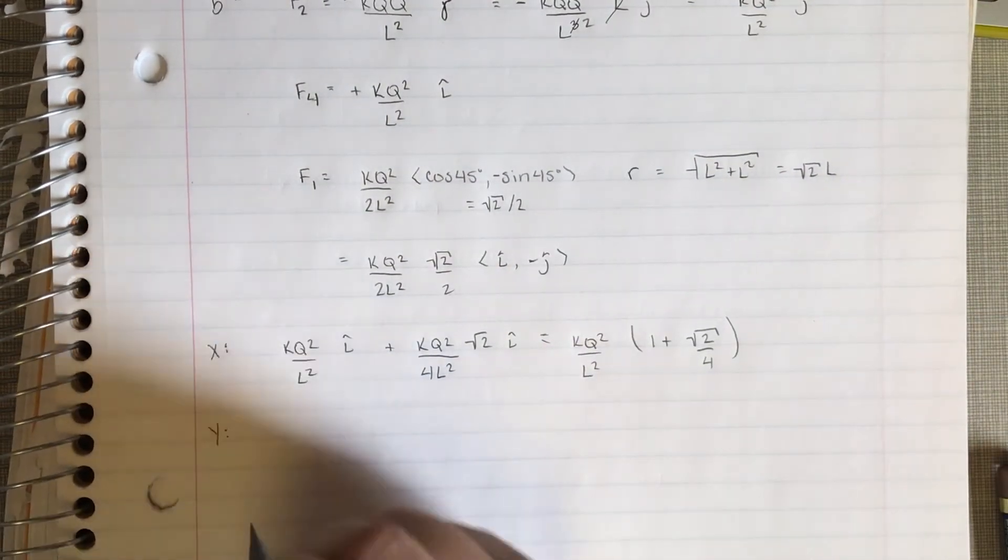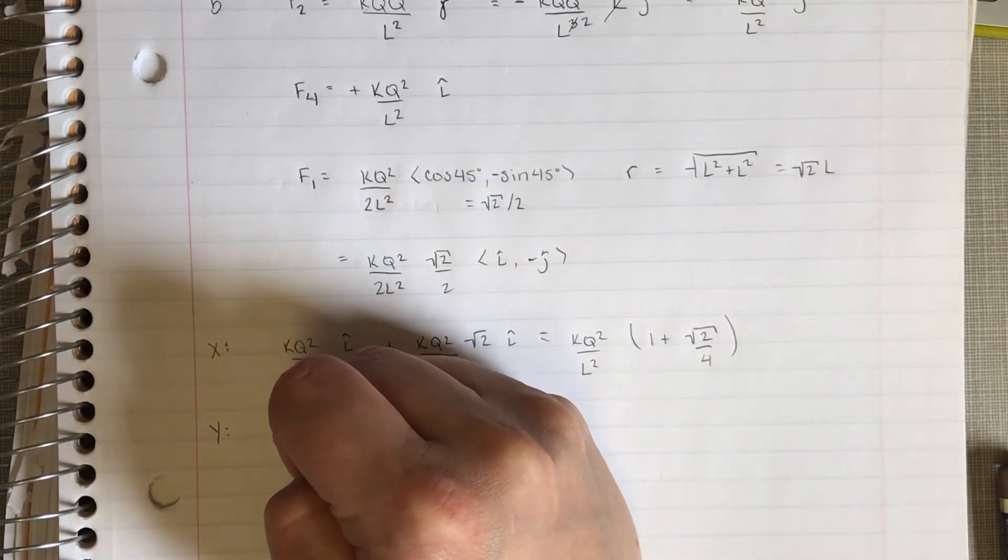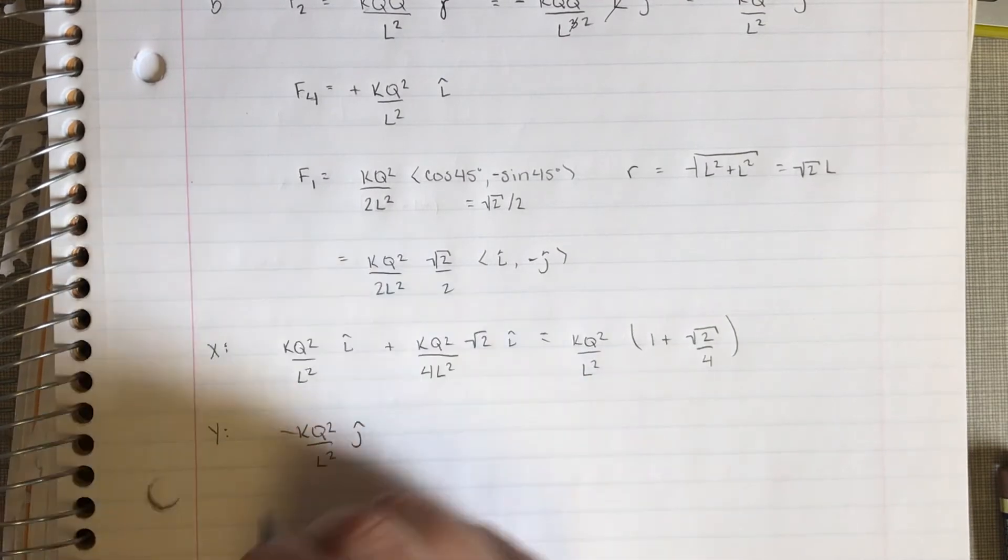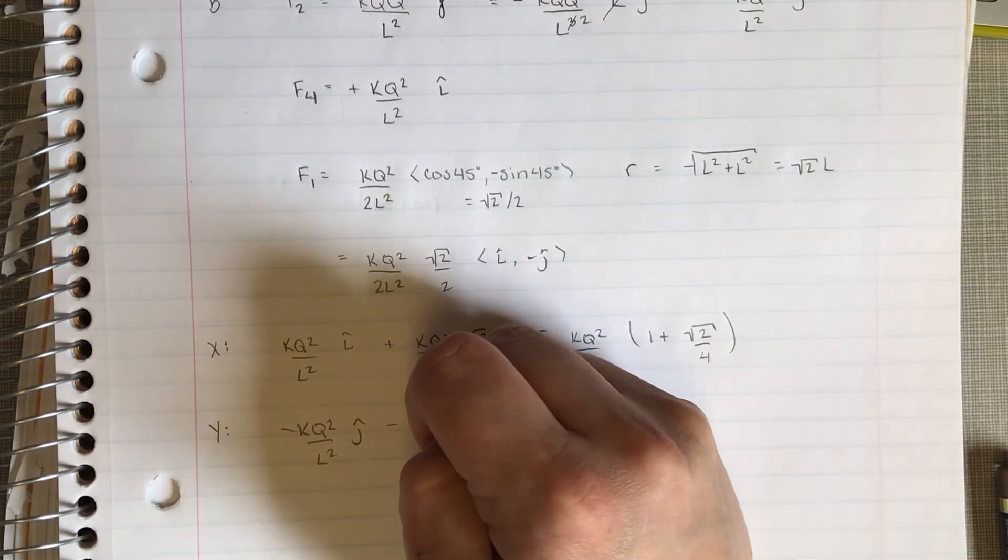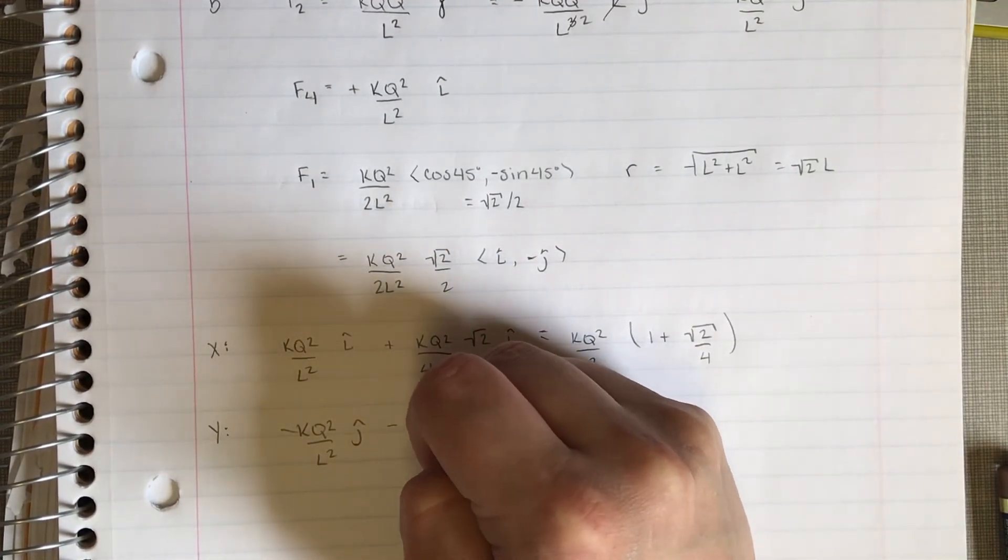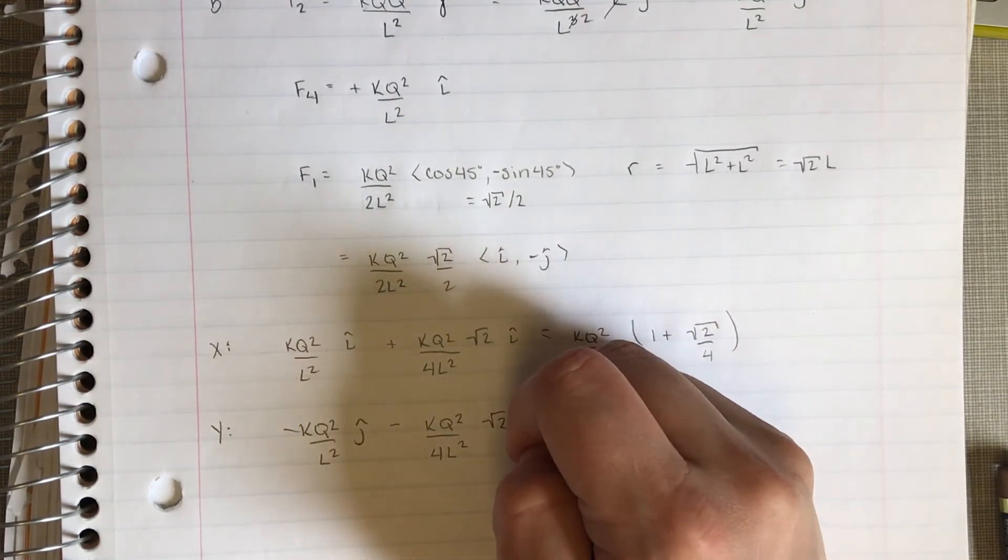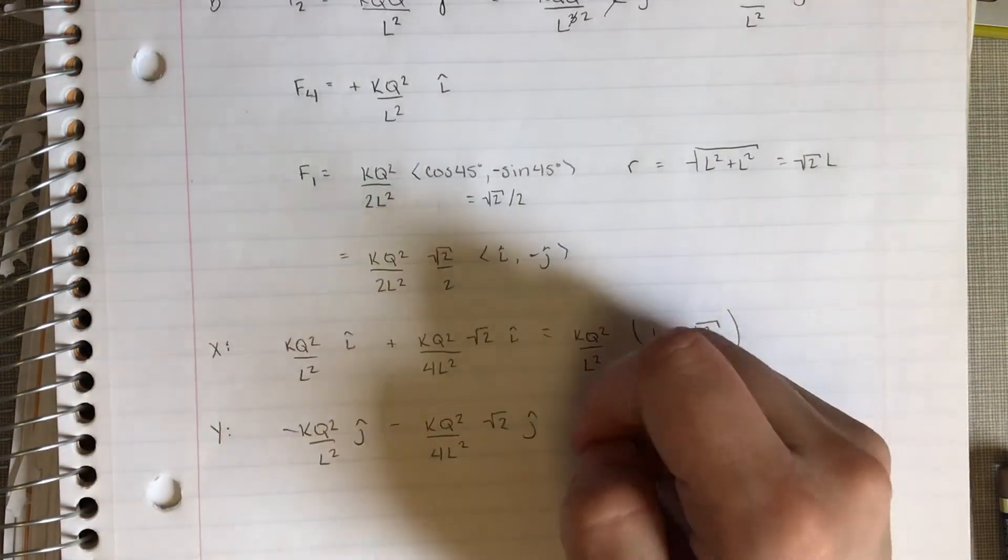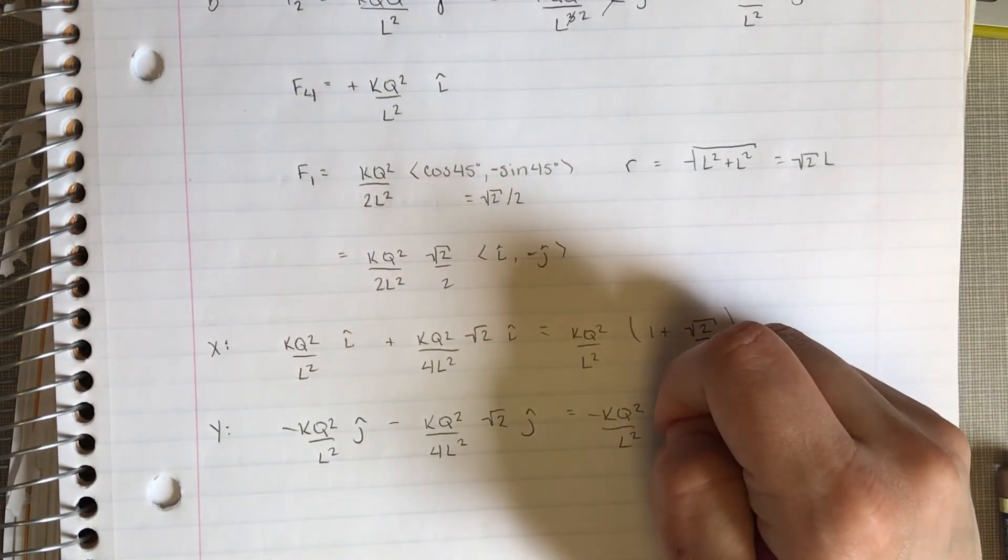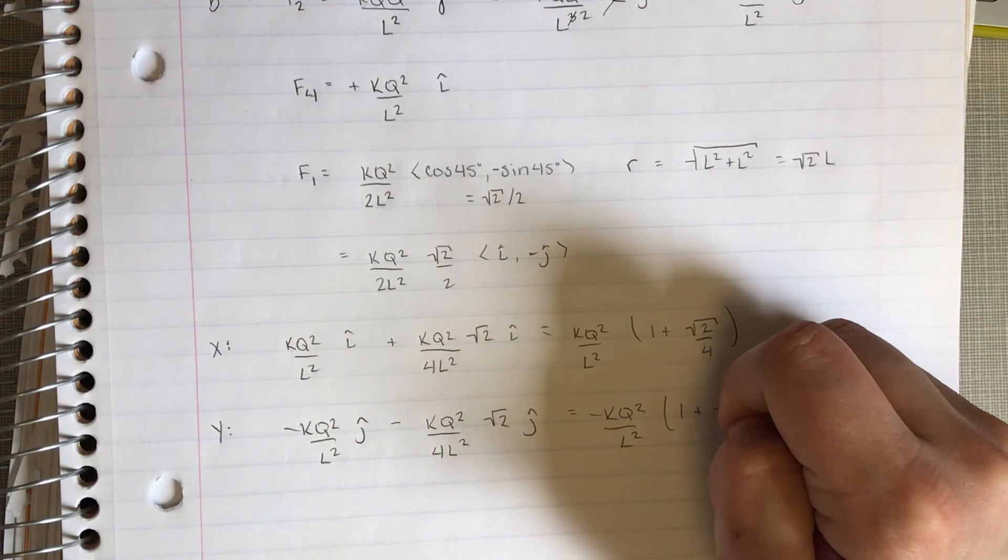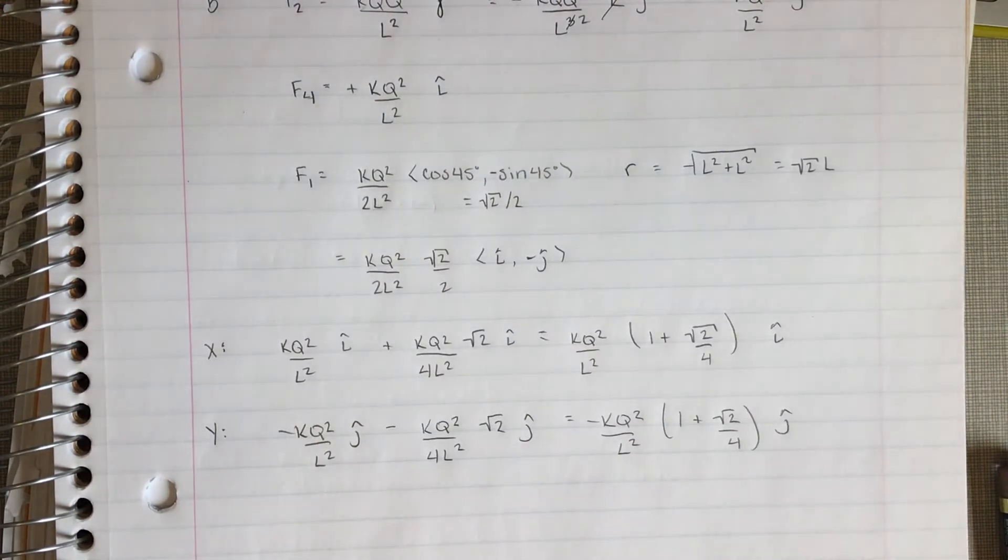Same thing with our y's. We have our k q squared over L squared in the negative j hat from charge number 2, minus k q squared over 4 L squared root 2 j hat. Same thing over here, we have minus k q squared over L squared with our 1 plus root 2 over 4. This one's i, this one's j.